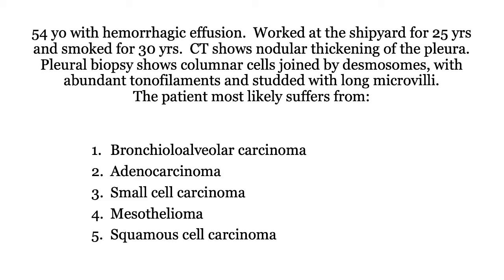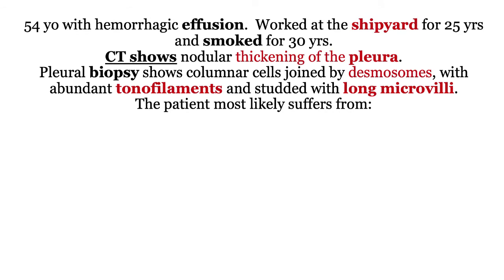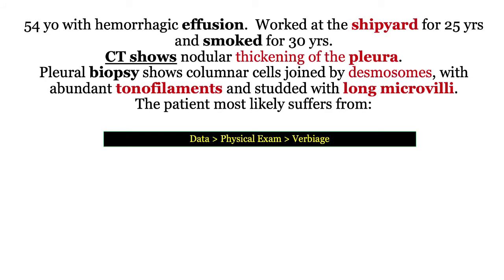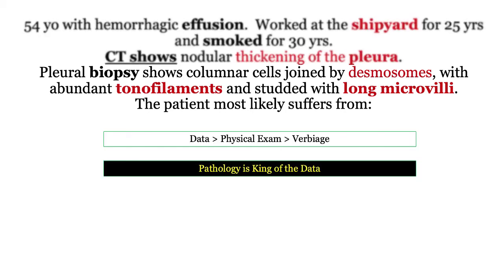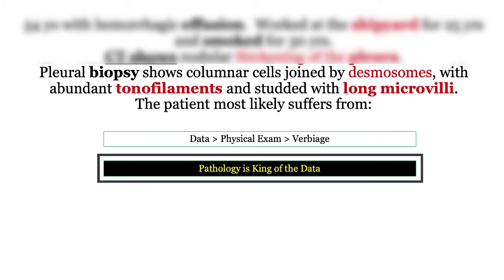Here is our next question — see if you can crush this one. We have a pleural effusion, which is another manifestation of asbestos-related lung disease. He is back at the shipyard and is a smoker, setting you up for bronchogenic carcinoma. CT confirms pleural disease, but now they are giving us a biopsy. When working through NBME vignettes, you need to rank-order information: data is most important, followed by physical exam, then question stem verbiage. When they give you a biopsy specimen, that trumps all other information — pathology is king, the unambiguous adjudicator in all questions.